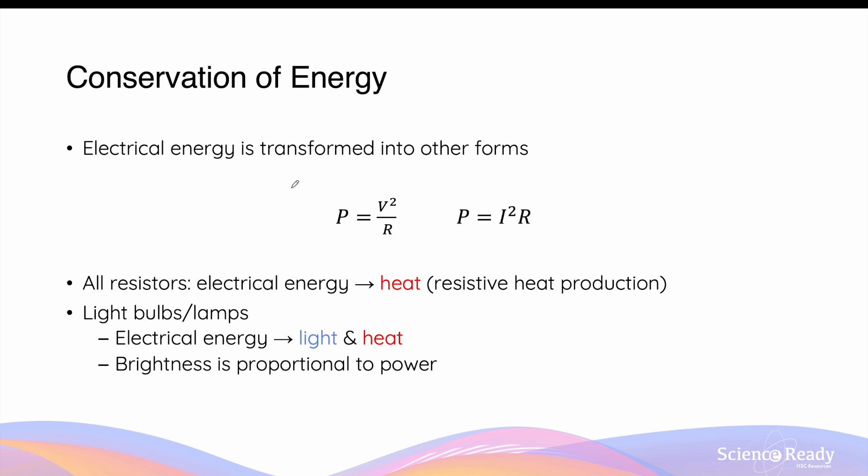Electrical power also obeys the law of conservation of energy. In this instance, in the context of electric circuits, the electrical energy is transformed into other forms. For example, when work is done on charges through a resistor, the electrical energy or work that's involved is transformed into heat. This is known as resistive heat production.